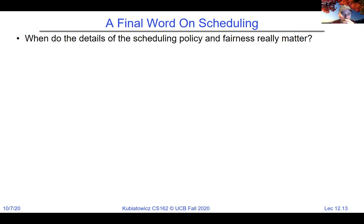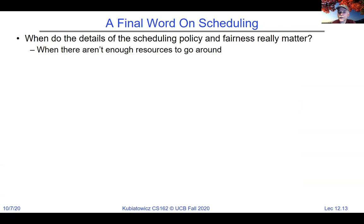A final word on scheduling: when do the details of scheduling policy and fairness really matter? When there aren't enough resources to go around. Everything we've been talking about for scheduling is about how you choose to divide up your resources among a bunch of shared threads. If you had just one thread, you wouldn't need to schedule. When there aren't enough resources to go around, your scheduling policy starts to get really important, and that's when you have to be careful about your scheduler.